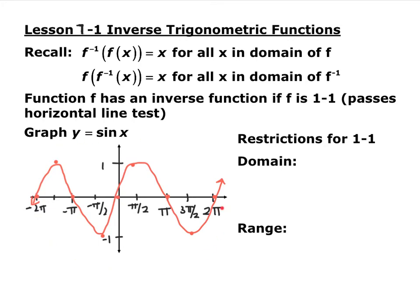Down here we have the graph of sine. If I draw a horizontal line anywhere, because sine repeats the same pattern over and over again, it will not pass the horizontal line test. So sine is not currently a one-to-one function. In order to make it one-to-one, we need to restrict the domain.